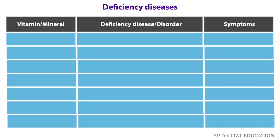Let's find out those diseases from the deficiency of various nutrients. Vitamin A: the deficiency of vitamin A causes loss of vision. Symptoms include poor vision and loss of vision in darkness, and sometimes complete loss of vision.